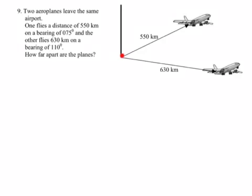One flies a distance of 550 kilometres on a bearing of 075 degrees. So that's this angle here.